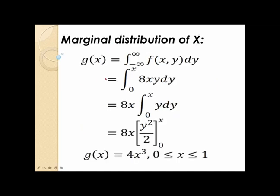For the marginal distribution of x, g of x is equal to the integral from negative infinity to positive infinity of the joint probability density f of xy dy. The joint probability density is 8xy and the range of y is from 0 to x. Simplifying and evaluating at y equals 0 and y equals x, the marginal density becomes g of x equal to 4x cubed, for values of x from 0 to 1.